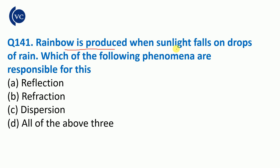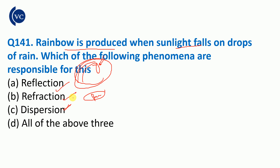Next question: rainbow. A rainbow is produced when sunlight falls on drops of rain. When sunlight hits a raindrop, a rainbow is created through a three-step process: reflection, refraction, and dispersion. The rainbow is created by all three processes — reflection, refraction, and dispersion. This is the right answer: all of the above three.